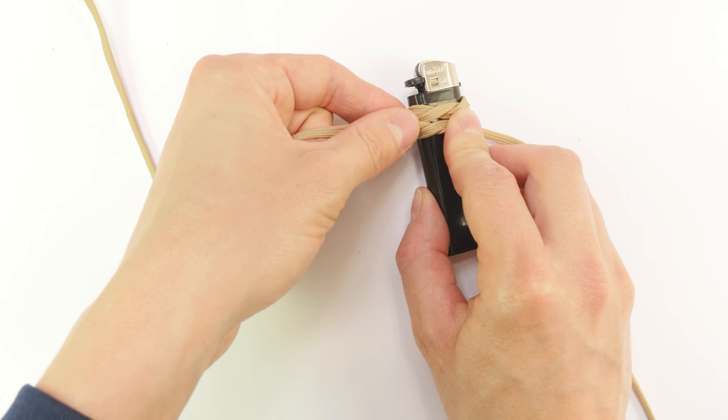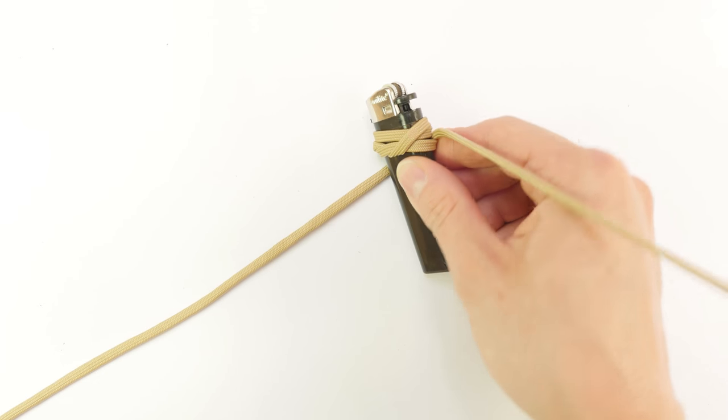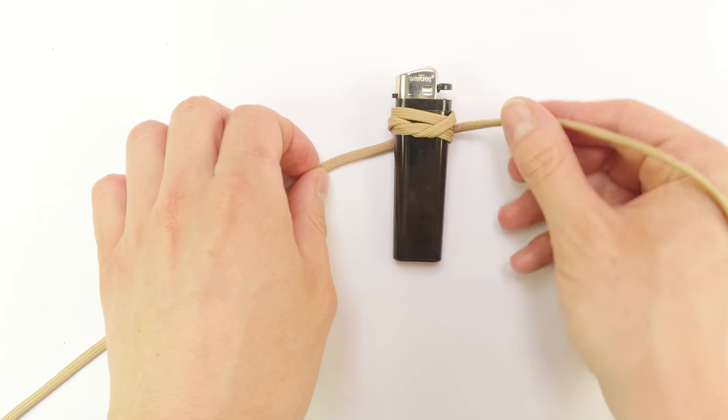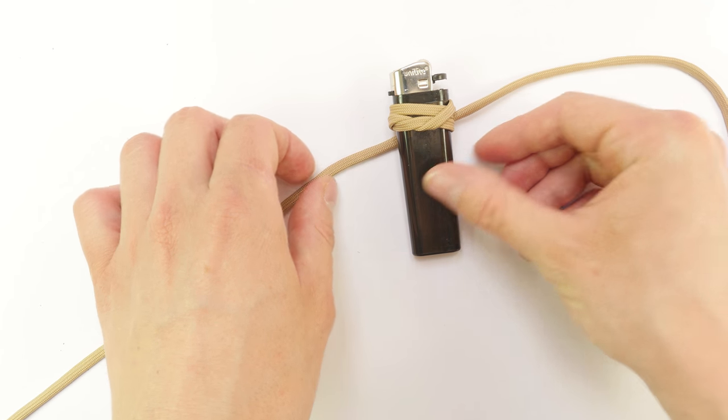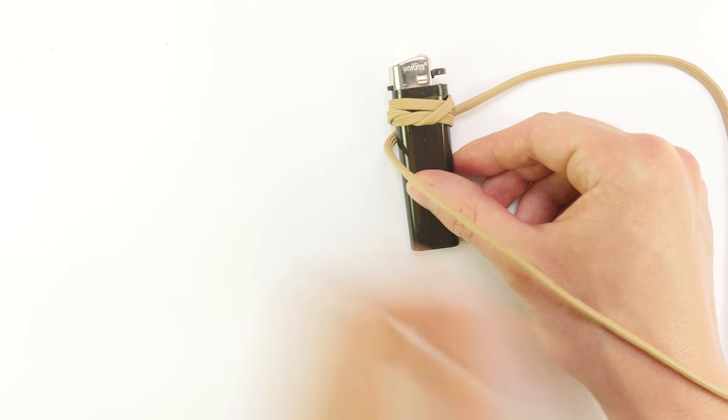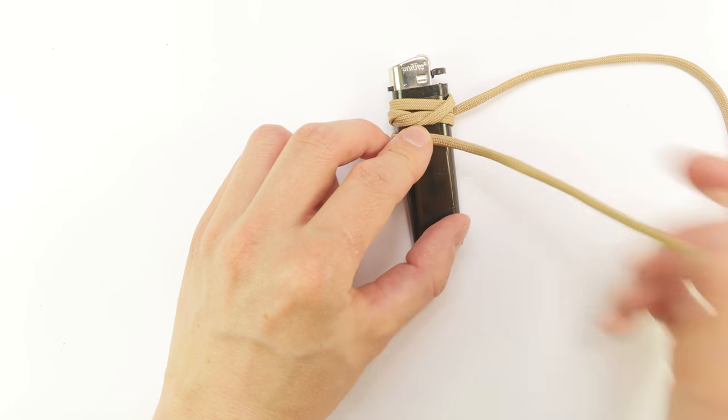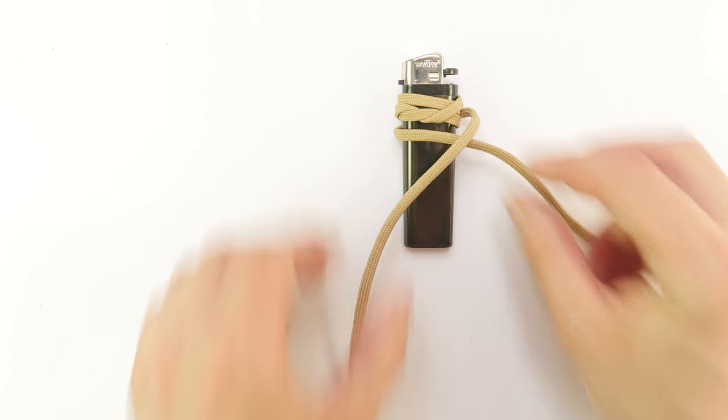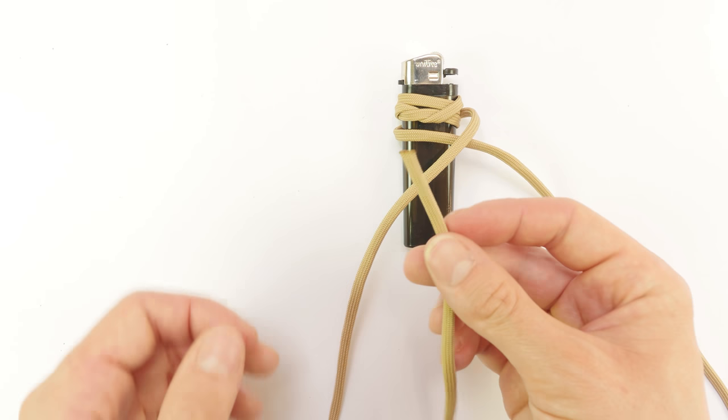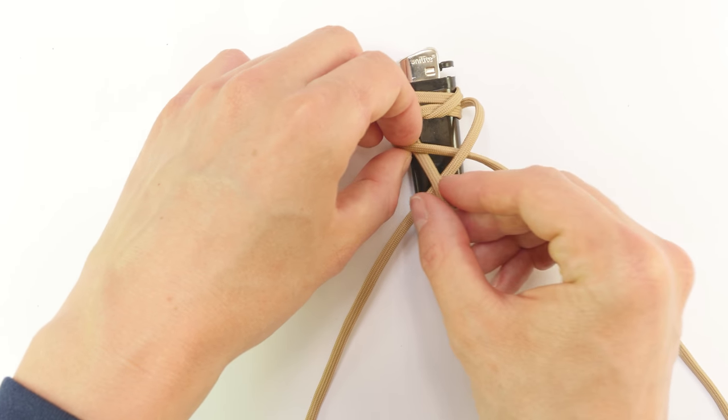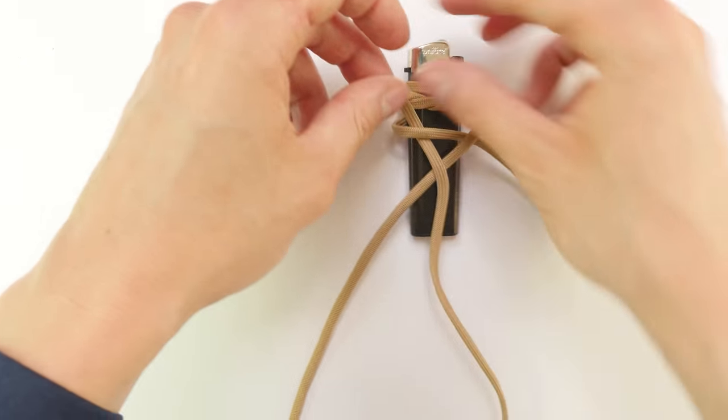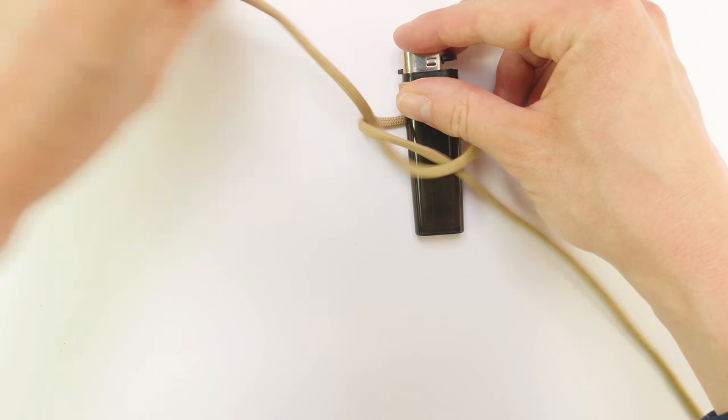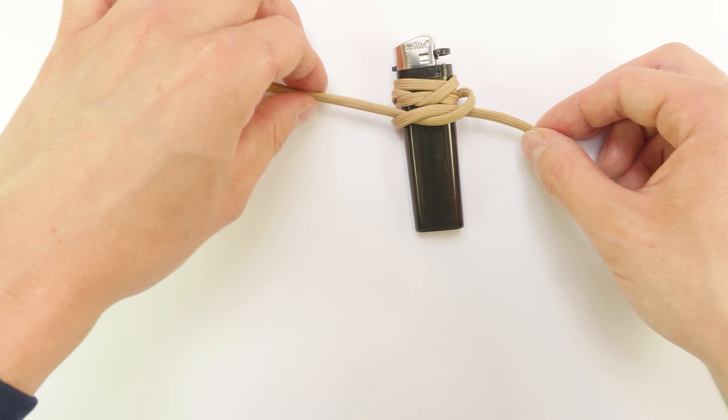Turn around again and tie another half knot. So the left end, the right end, take the right end and place it under the left end, then tighten up.